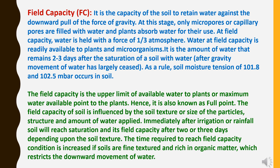Field capacity is the upper limit of available water to plants, hence it is also known as the full point. The field capacity of soil is influenced by soil texture, particle size, structure, and the amount of water applied. Immediately after irrigation or rainfall, soil reaches saturation, and its field capacity is reached after two or three days depending upon soil texture. The time required to reach field capacity increases if soils are fine-textured and rich in organic matter, which restricts the downward movement of water.